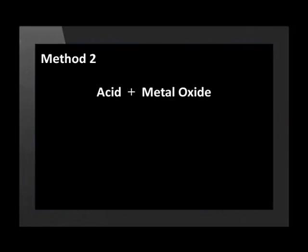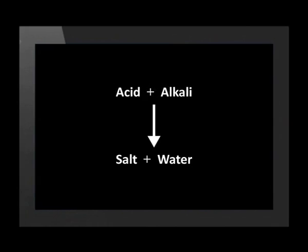Let us discuss the other general equations for the production of a salt. The next way to prepare a salt is by the reaction of an acid with a non-soluble base. One example of a non-soluble base is a metal oxide. The general equation is: an acid plus a metal oxide react to form a salt plus water. This is very similar to the equation for an acid and an alkali.